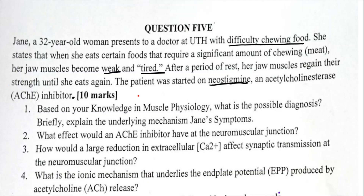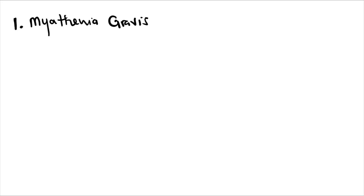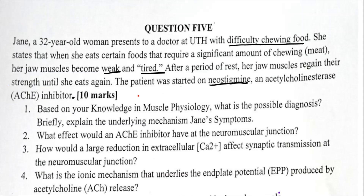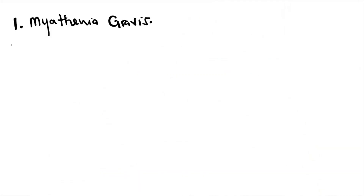A condition characterized by muscle fatigue and weakness after some activity is myasthenia gravis. So our possible diagnosis is myasthenia gravis. Number two asks us to briefly explain the underlying mechanism of Jen's symptoms — that is, what happens in myasthenia gravis.